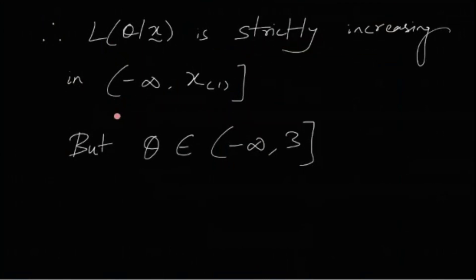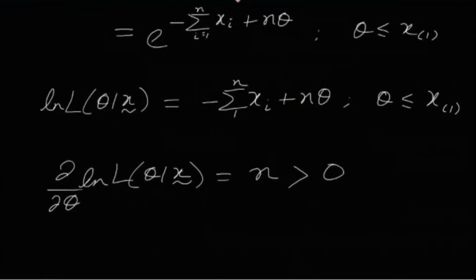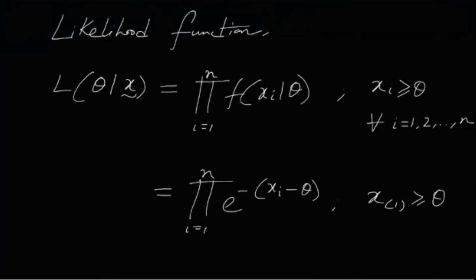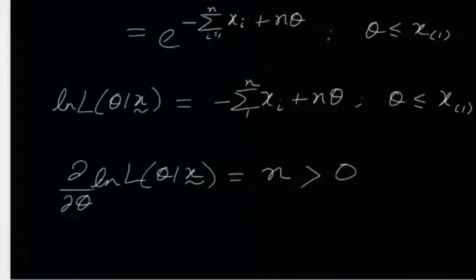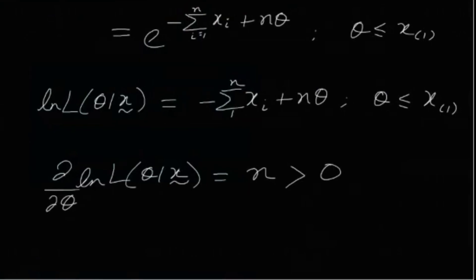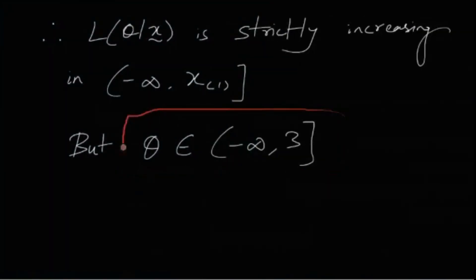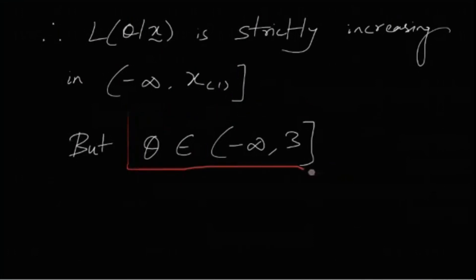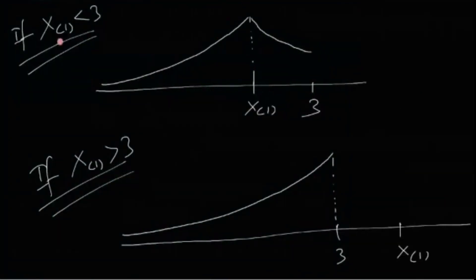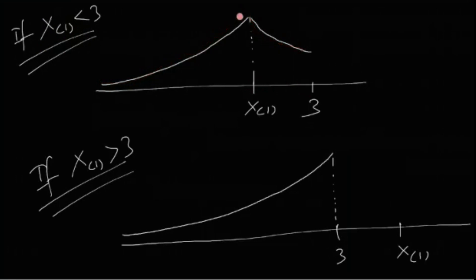Since the likelihood function is strictly increasing up to x_(1), it achieves its maximum at x_(1). You might think the MLE is simply x_(1), but remember θ is restricted to (−∞, 3]. Consider Case 1: if x_(1) < 3, then the likelihood is increasing up to x_(1), which lies within the parameter space, so the likelihood achieves its maximum at x_(1).